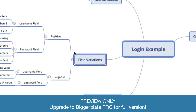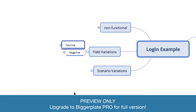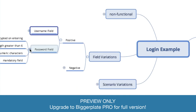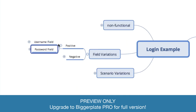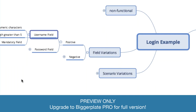For example, on the positive and negative scenarios that I showed you guys on the Excel example, we've got positive variations here and we can actually, if you look at the username field and password field, see what the different permutations are that you can actually test on.